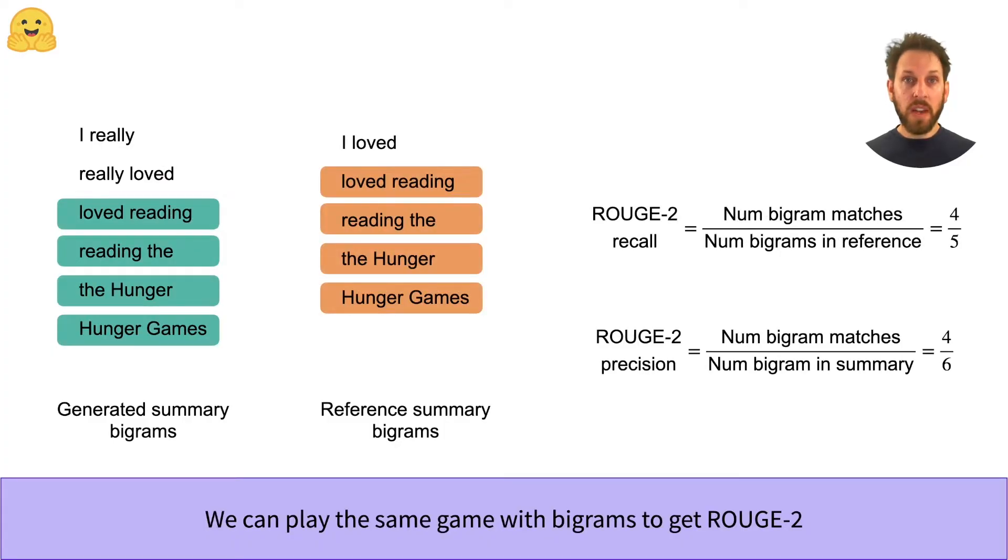Now, we can change the granularity of the comparison by comparing bigrams instead of unigrams. With bigrams, we chunk the sentence into pairs of consecutive words and then count how many pairs in the generated summary are present in the reference one. This gives us ROUGE-2 precision and recall, which as we can see is lower than the ROUGE-1 scores from earlier.